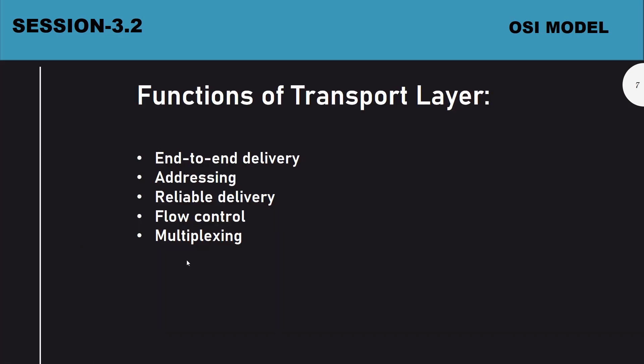End-to-end delivery means data travels from one application at one end to another application at the other end through the transport layer. Addressing also happens through the transport layer. Reliable delivery means if a packet is lost in the middle, it is automatically retransmitted based on acknowledgments. Flow control — similar to what we discussed in the data link layer — is also managed by the transport layer. Multiplexing is a big topic that will be covered in a separate video.